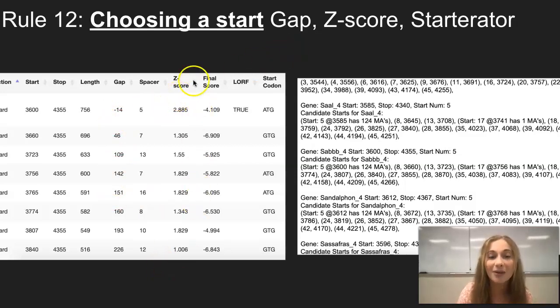And for z-score in this column, we are looking for the number closest to 2, whether it's a little bit under or a little bit over. So in this example, the 1.829 would be the best option compared to the 1.006 option because it's the closest to 2 out of all of these.